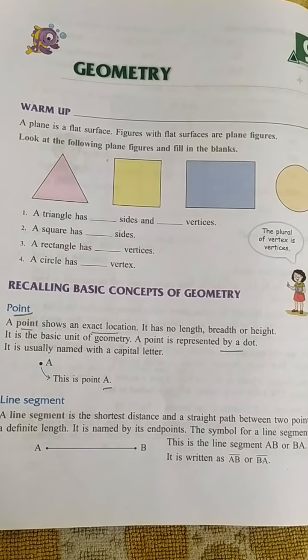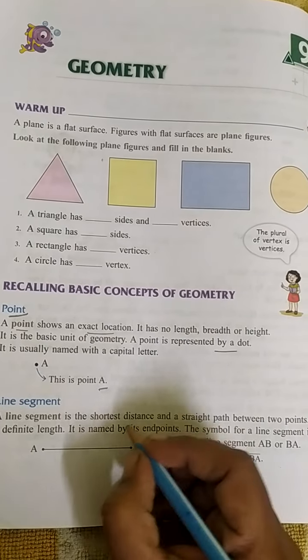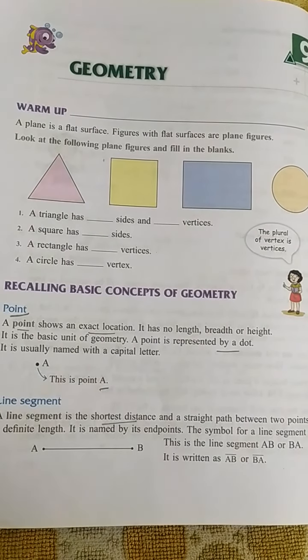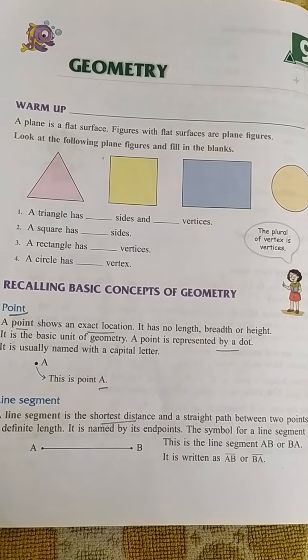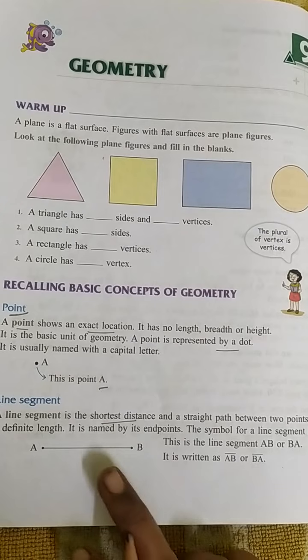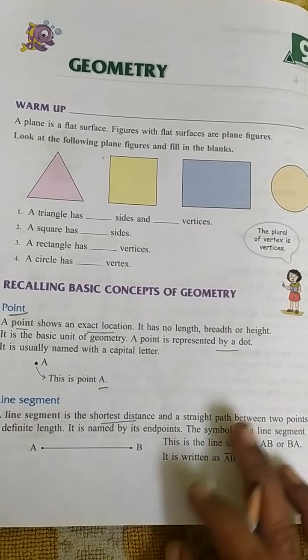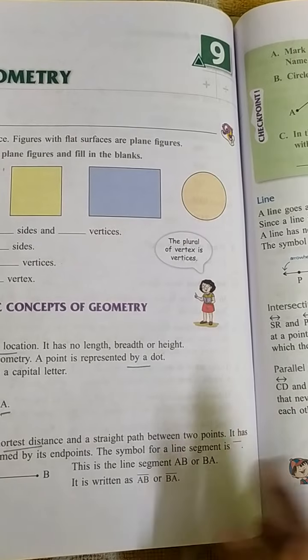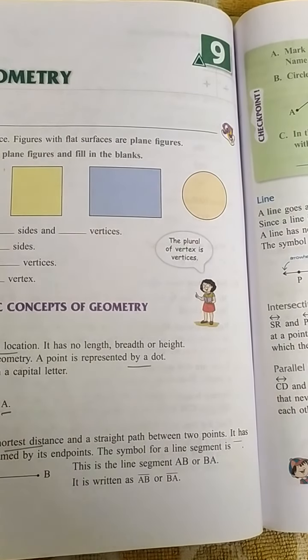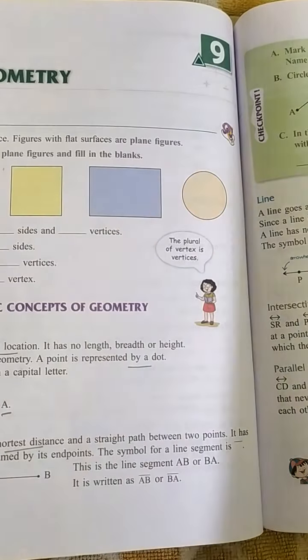Next topic is line segment. Line segment is the shortest distance between two points. It has a definite length. It is named by its endpoints and we denote it by AB with a line above. So we call it a line segment.